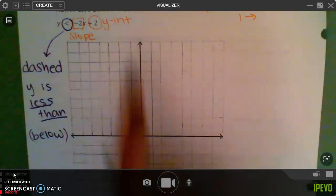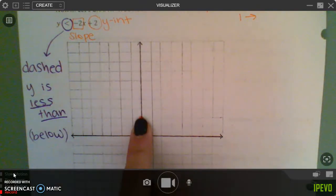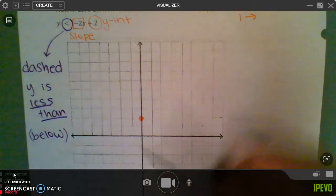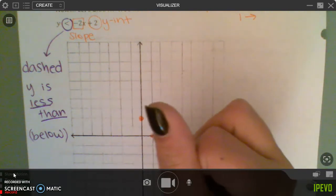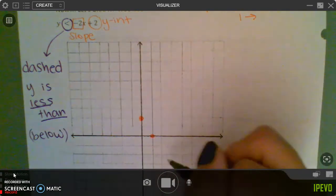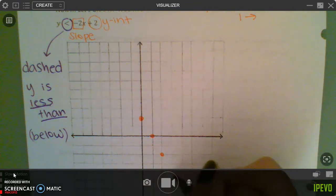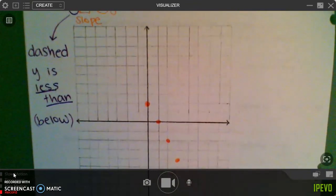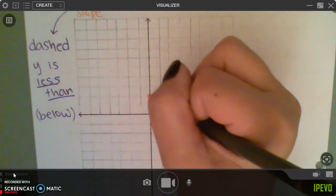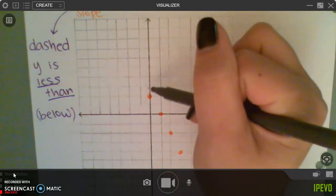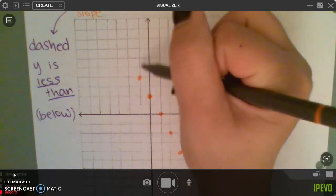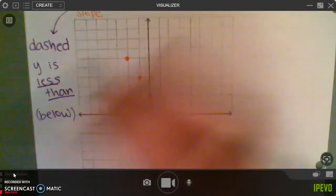So from my start point, the 2, I have to go down 2 and to the right 1. Go down 2 more and to the right 1. Down 2 more and to the right 1. And then you can also, at your start point, do the opposite. Go up 2, left 1, up 2, left 1.